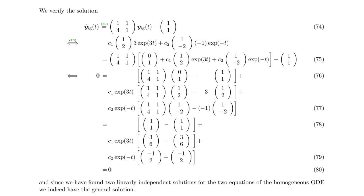Now let us verify that the solution we found is indeed a solution of our inhomogeneous differential equation. We plug in our solution and its derivative, then rearrange all terms, grouping by the exponential function — those with pre-factor C₁·exp(3t), C₂·exp(−t), and those without. We calculate the matrix-vector products and see they all cancel out, yielding zero on the right side, confirming the solution is valid.